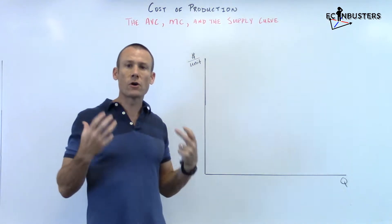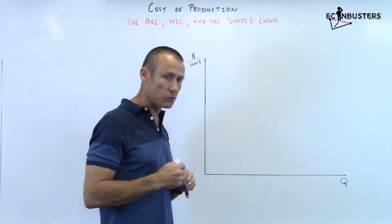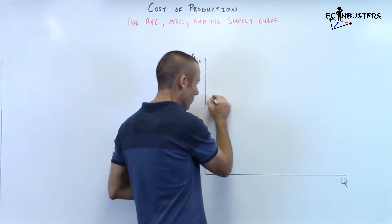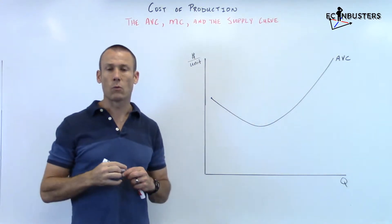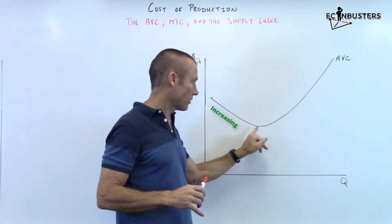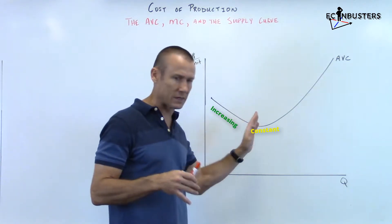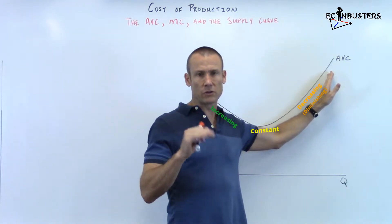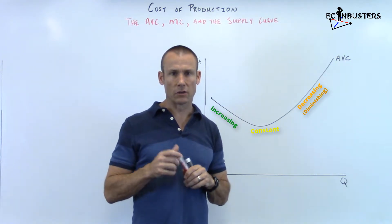First, I'm going to draw AVC — that's a review. We pick some dot, go down and then up, and label that AVC. Why does it have that shape? Increasing returns to scale, then decreasing or diminishing returns to scale. We really want to focus on the minimum of AVC.